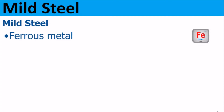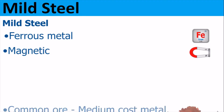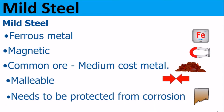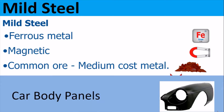Mild steel. Mild steel is a ferrous metal. It is magnetic. It is a common ore, so it is a medium cost metal. It is malleable, but it does need to be protected from corrosion. So many car body panels are made from mild steel.